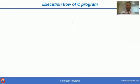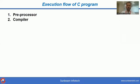Hello friends, in this video I am going to discuss how a C program executes. There are mainly four steps in the execution flow of a C program: first preprocessor, second compiler, then assembler, and the last one is linker.